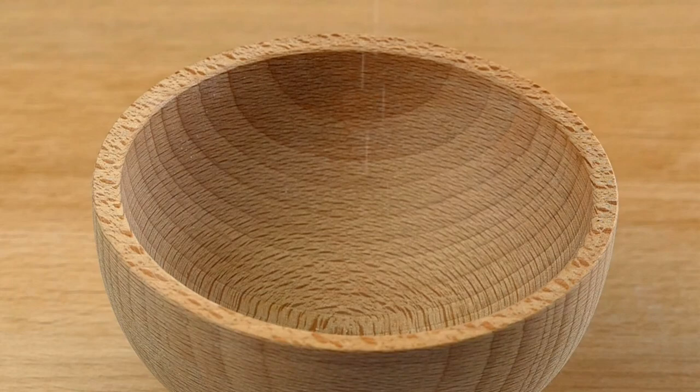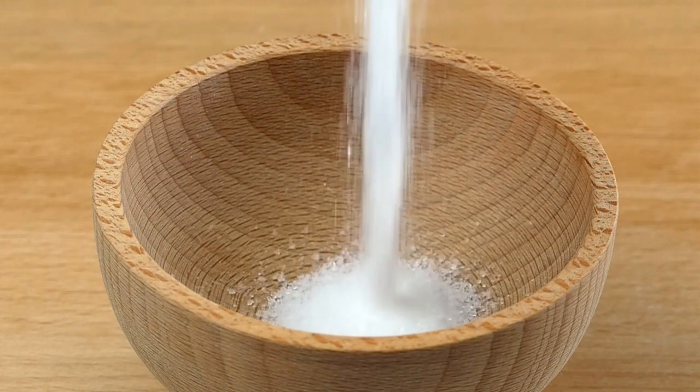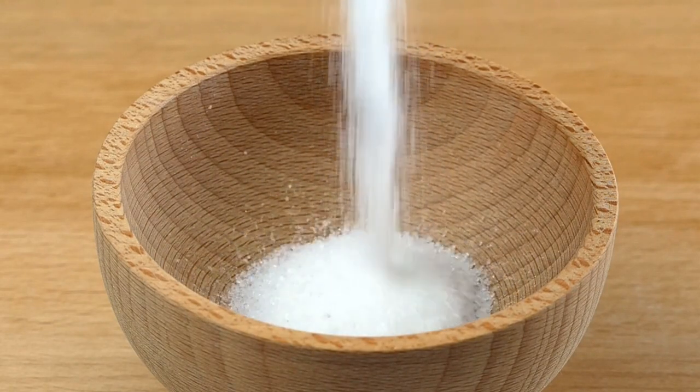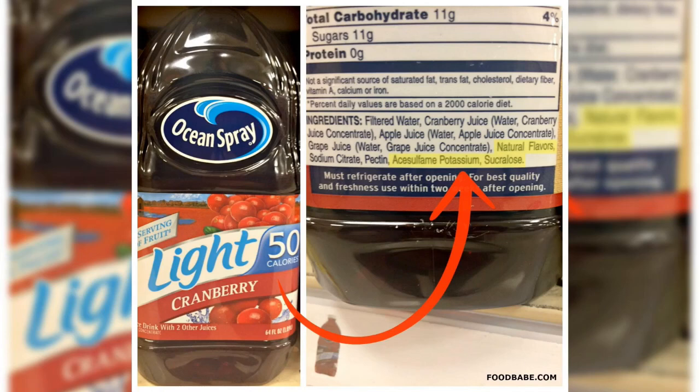Next on this list, acesulfame potassium, or ACE-K. You can find ACE-K in diet sodas, protein shakes, sugar-free desserts, and gum.